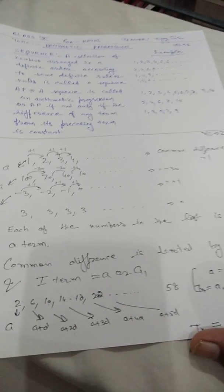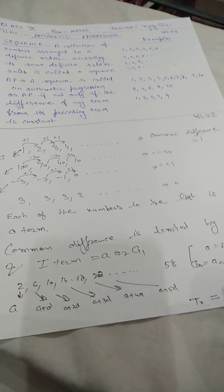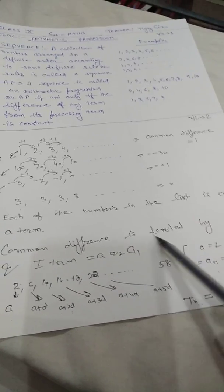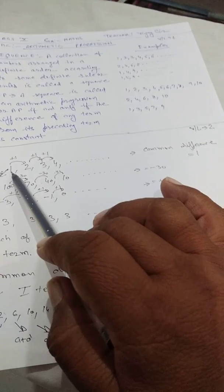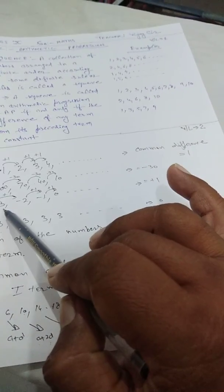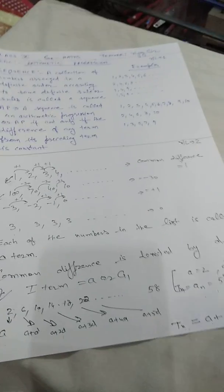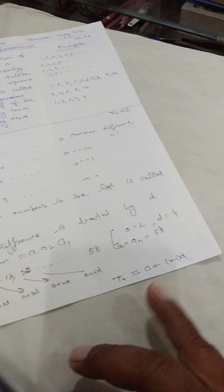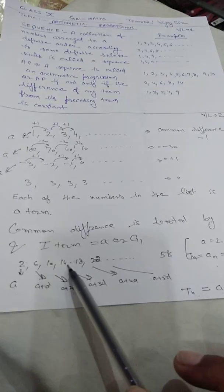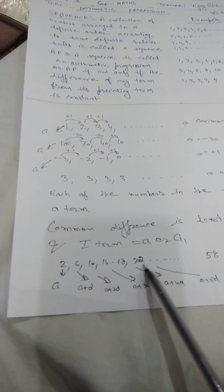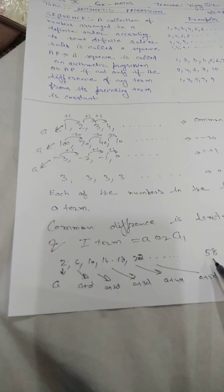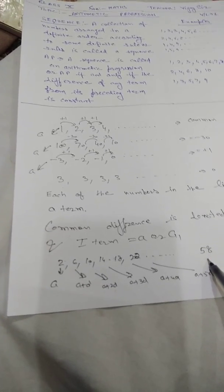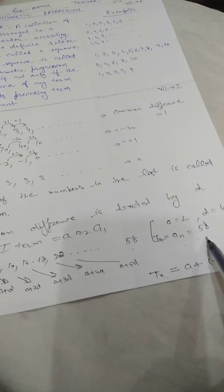Every first term is denoted by a or a₁. In example 1, a₁ is 1; in the next, 100; in the next, minus 3; in the next, positive 3. The last term is denoted by Tₙ or aₙ. For example: 2, 6, 10, 14, 18, 22 ... and the last term is 58. This last term is called the nth term.